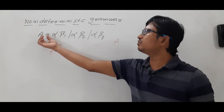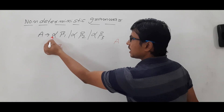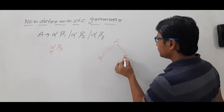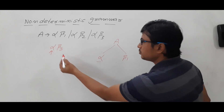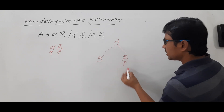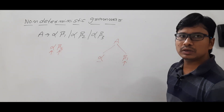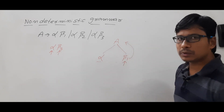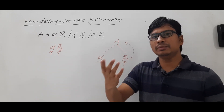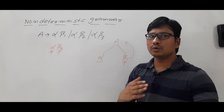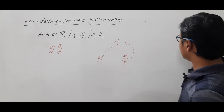So what the algorithm will do: first it will use the production αβ1, because the input pointer is looking at α and α is matching, so it generates αβ1 from A. This one and this one match, then the input pointer moves forward. Now β1 is there in the production but β3 is in the input, so there is no match. Then what do you do? You go for backtracking. Backtracking means whatever decision you have taken is wrong, so you reverse your decision — in DBMS terms we call it a rollback. So we go back to the previous action; that is what we call backtracking.